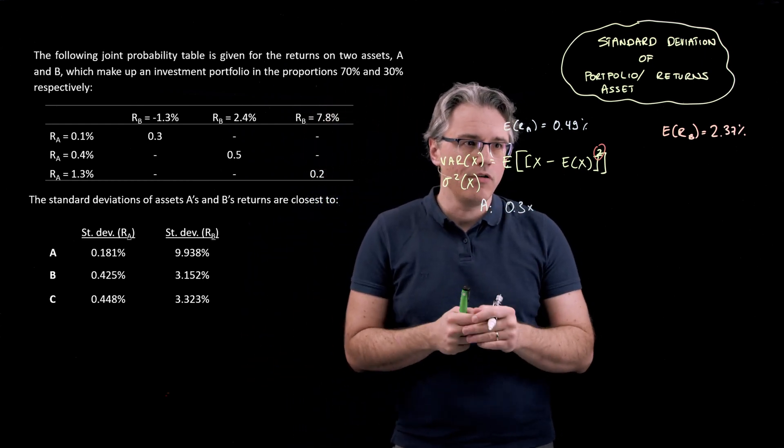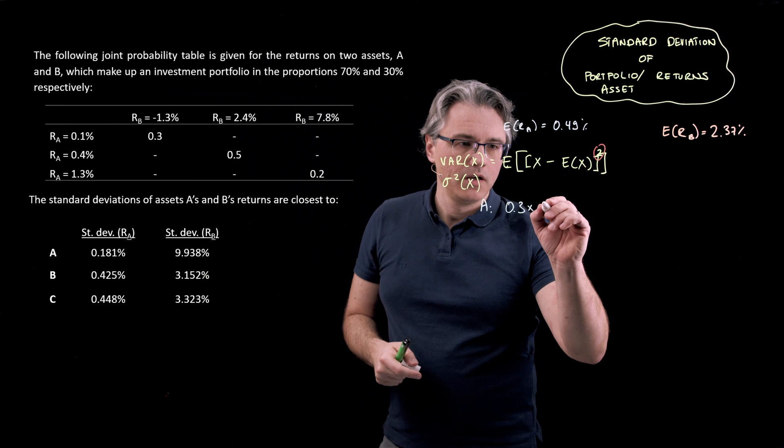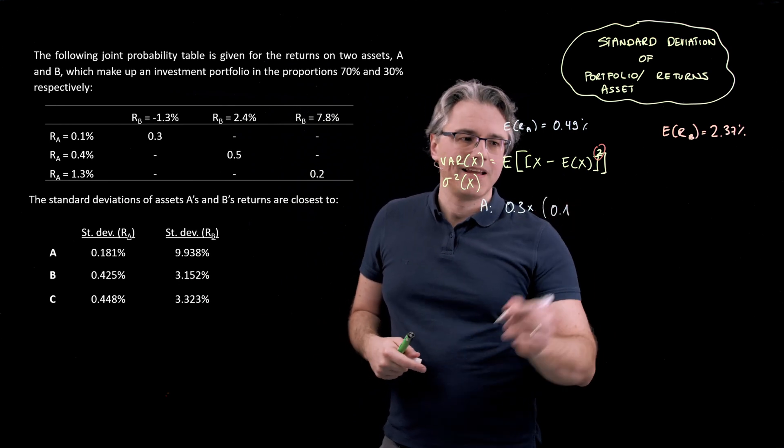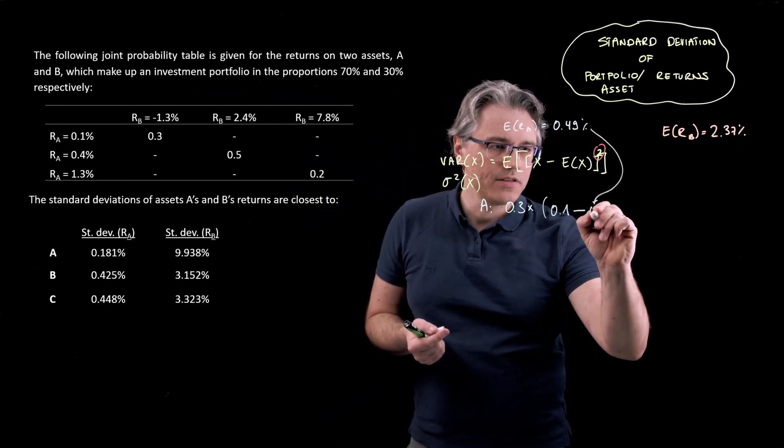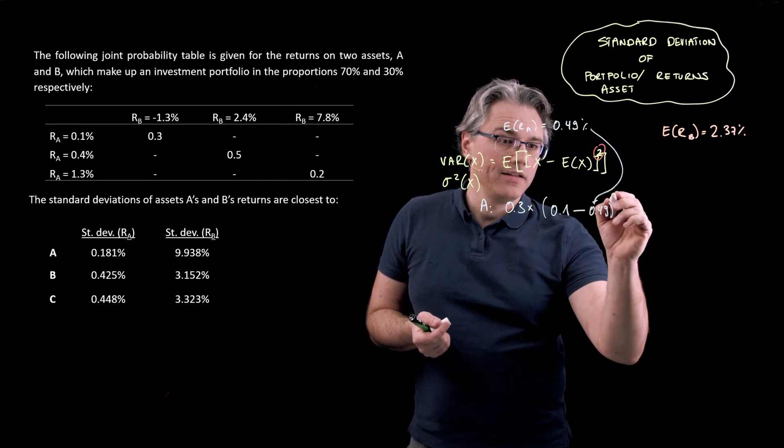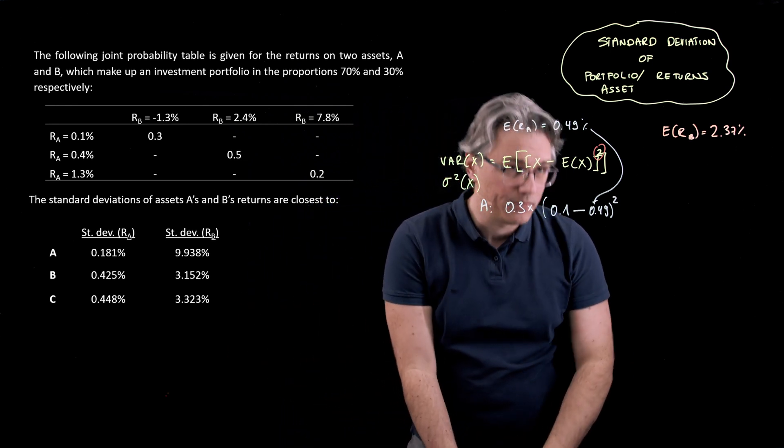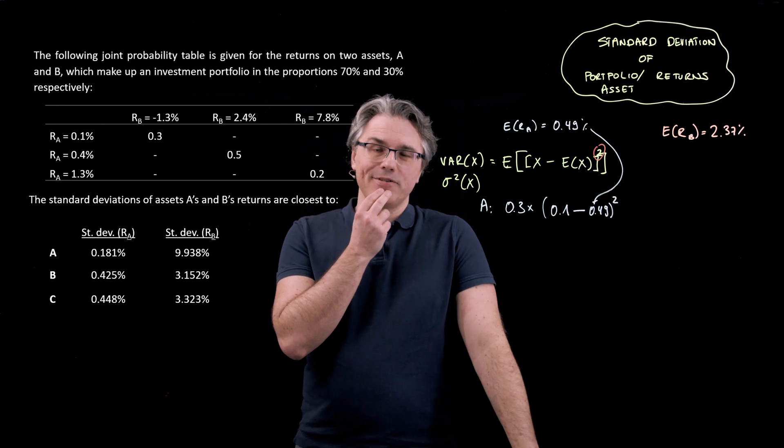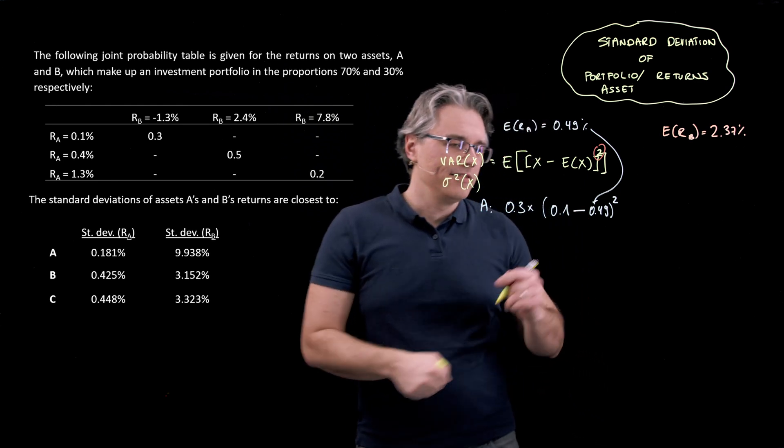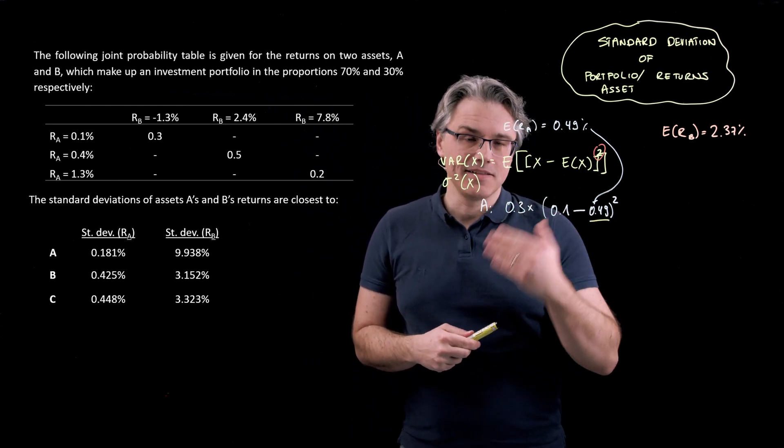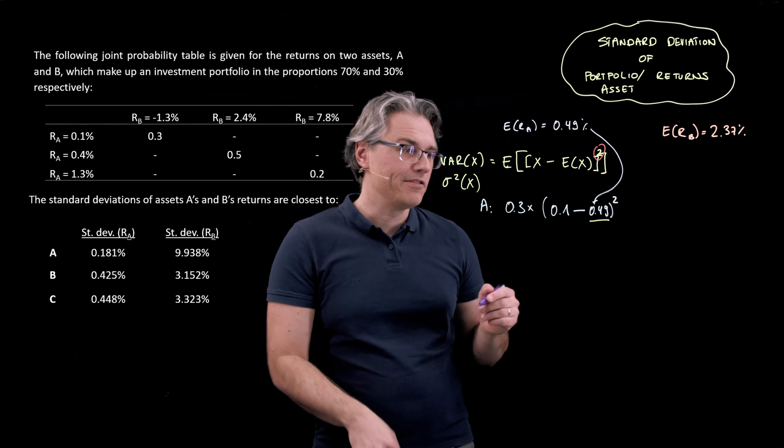Whatever is the value taken by A, the first one, 0.1 minus its expected value or expected return, which is naturally this 0.49. And we're going to square this because, as you may remember, if you don't do the squaring when computing standard deviation or variance measures, if you don't square the differences away from the mean, this is the mean or the expected value, and that's a specific observation or a specific value that the variable may take on, you'll get as a value of 0, simply.